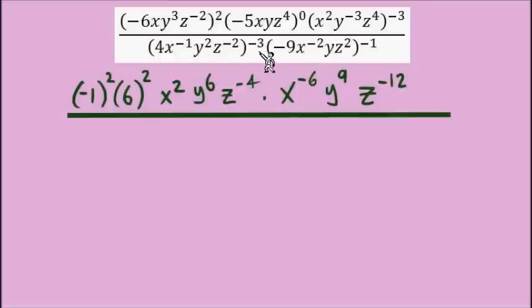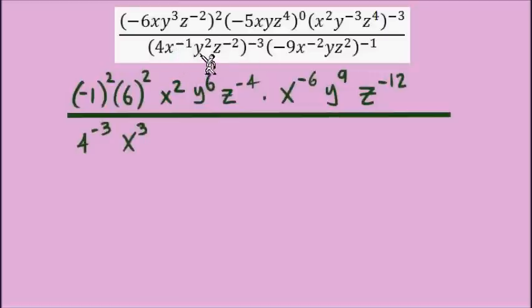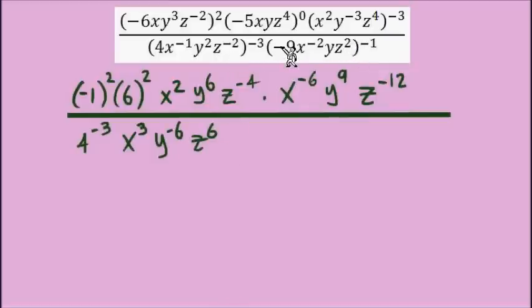Now let's take care of the denominator. Working negative 3 into the 4 and then into x gives us x to the power of positive 3, y to the power of negative 6, and z to the power of positive 6.